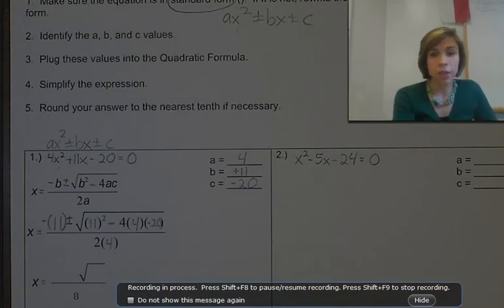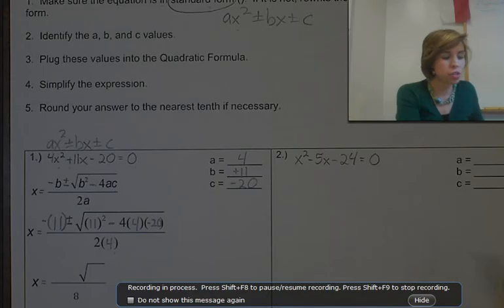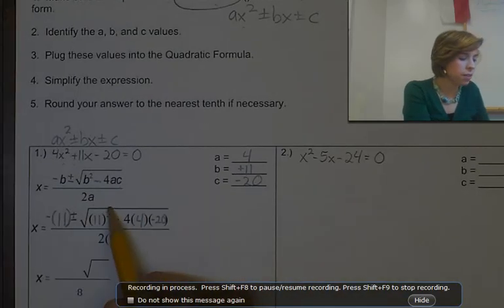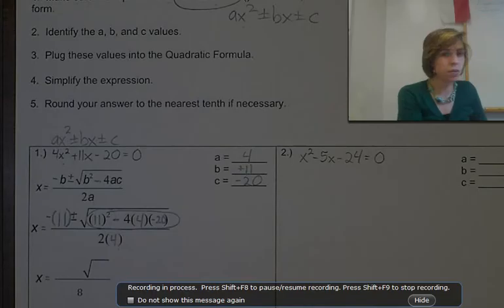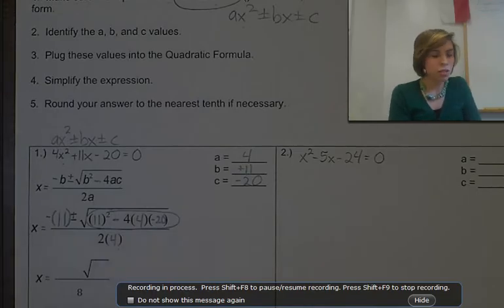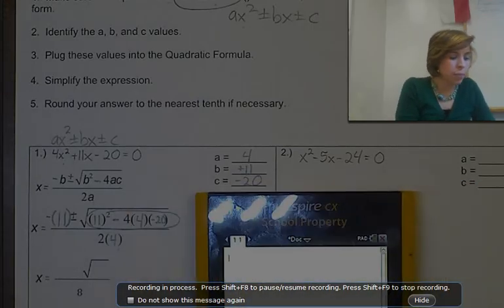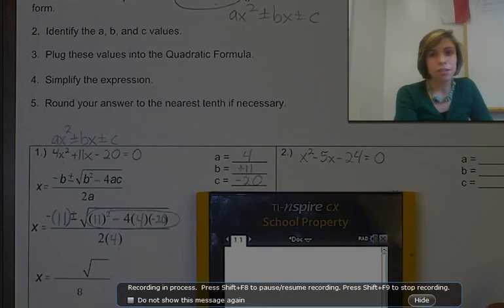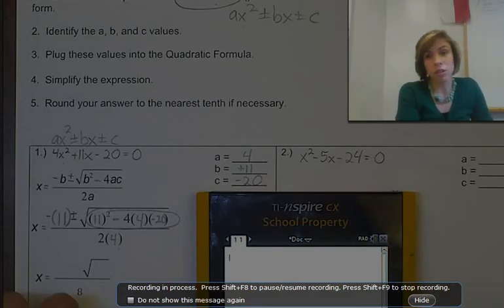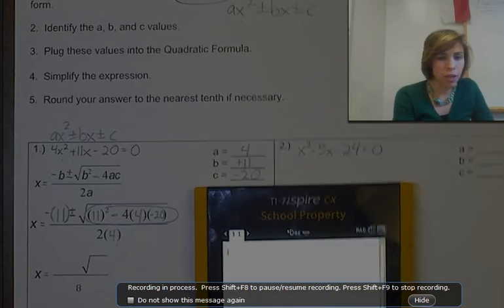We plugged it into the formula, now we're going to simplify it. Start with simplifying the stuff under the radical. I'm going to take my calculator. By the way, you don't need an expensive calculator — you can just use a scientific calculator, something that you can square and take square roots with. That's all you really need for this.